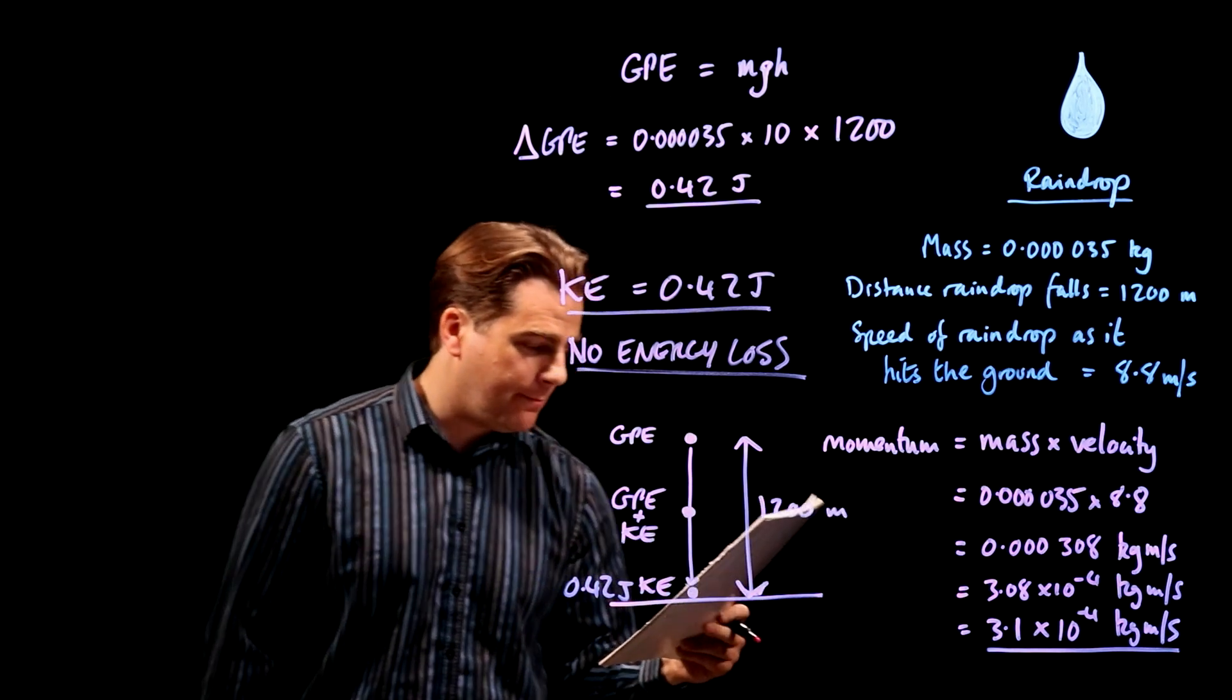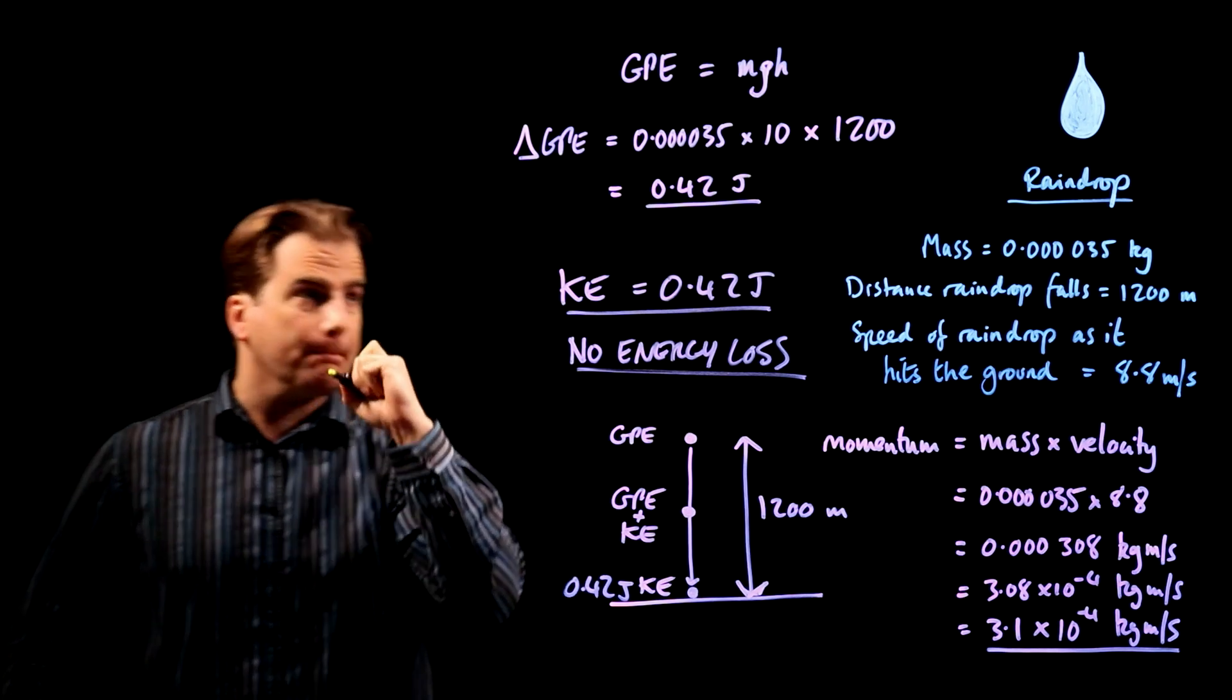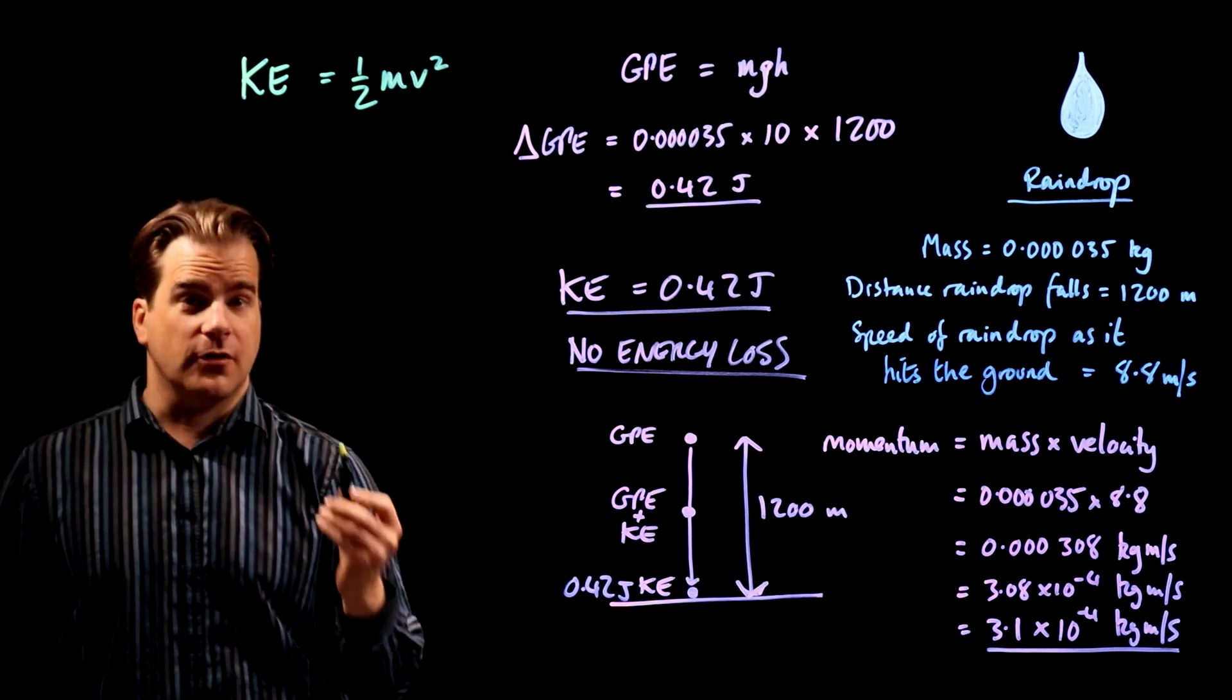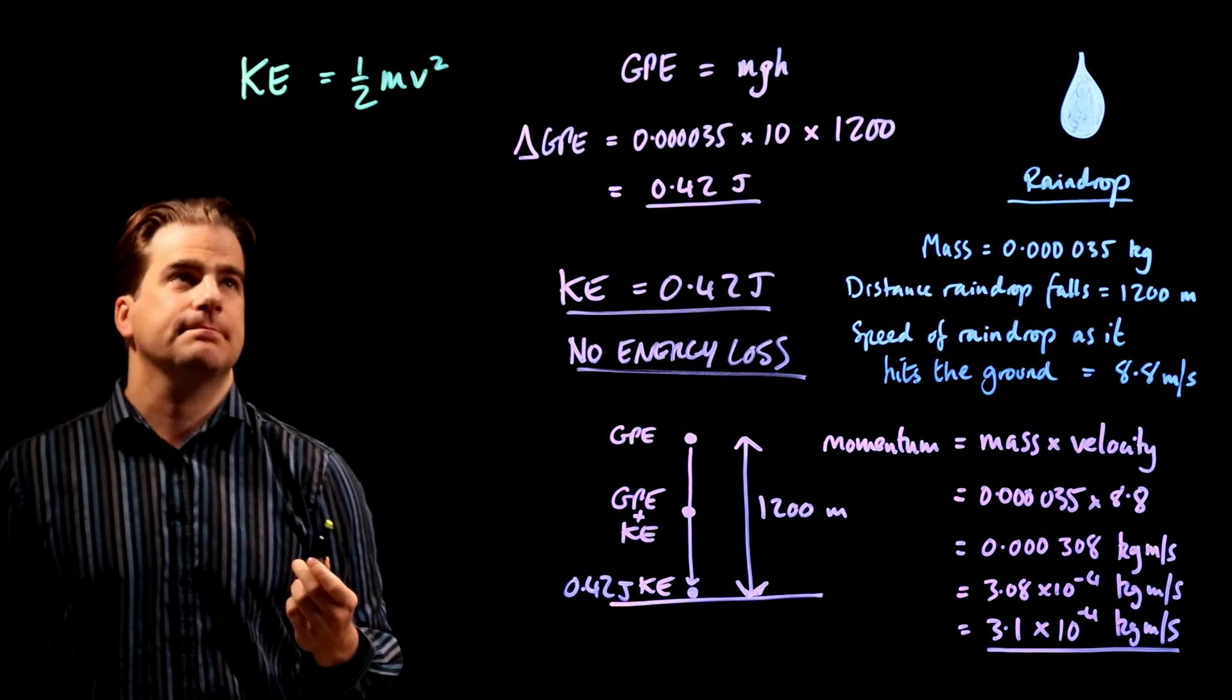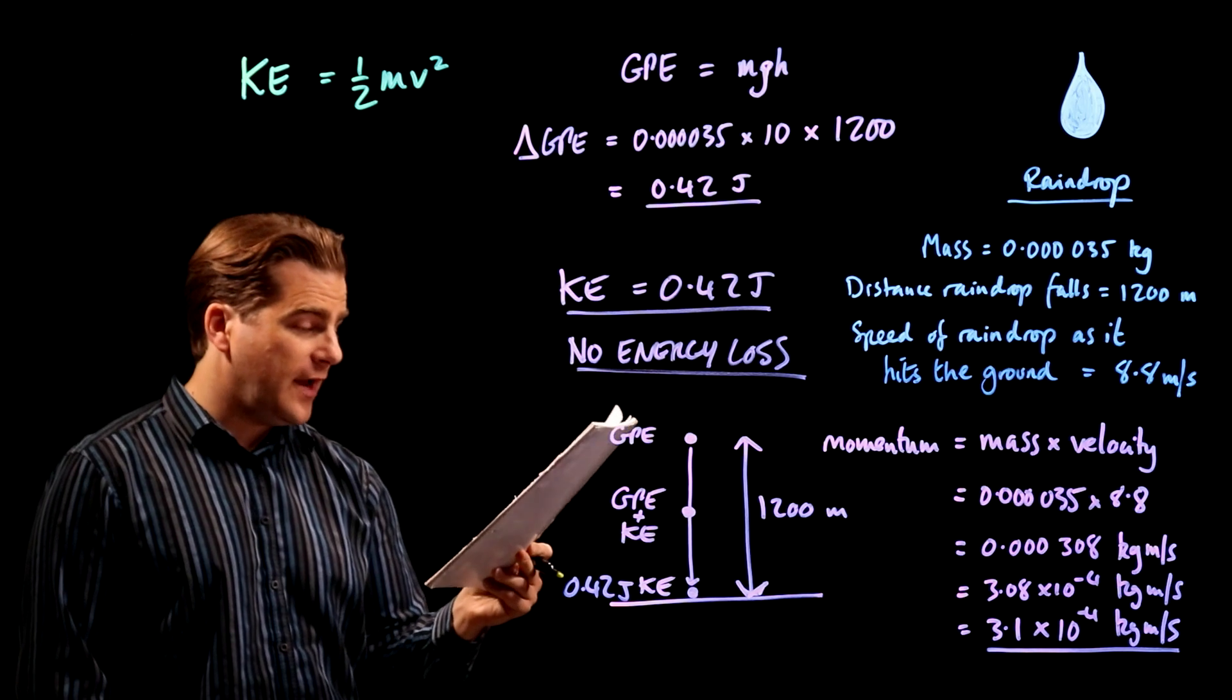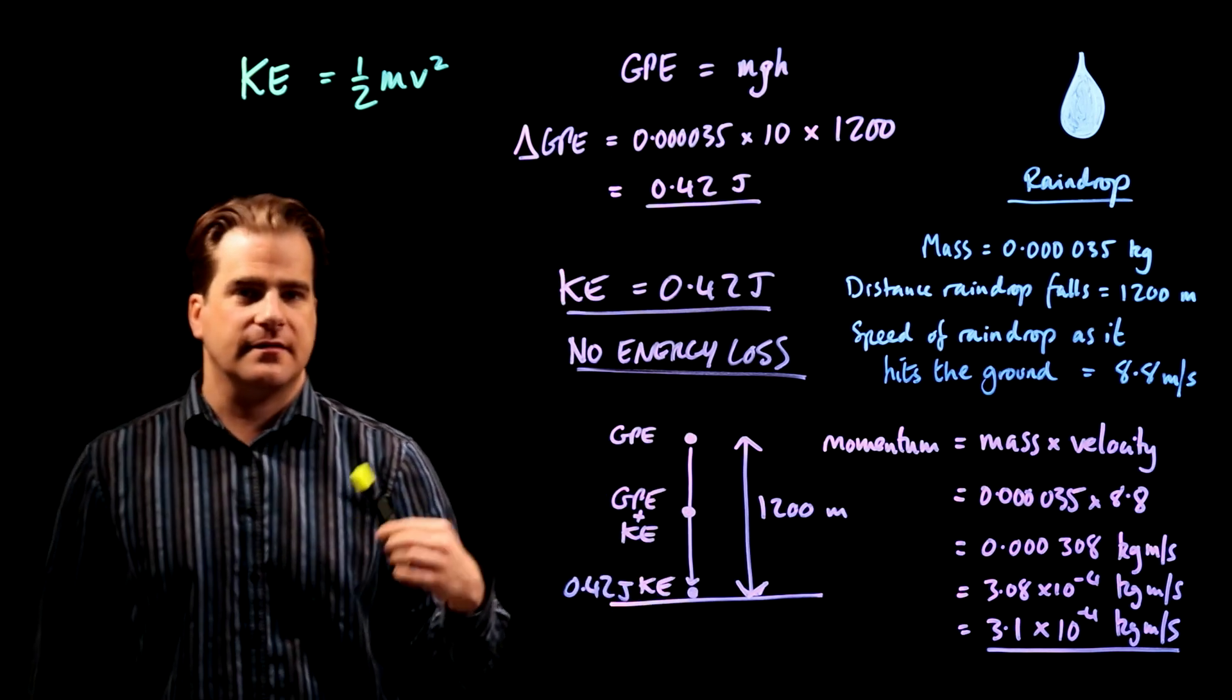Right. State the equation linking kinetic energy, mass, and speed. Again, you've just got to know this. So, let's have a change of colour. Okay. Kinetic energy is half mv squared. Okay. You've got to know that, right? Half times the mass times the velocity squared.